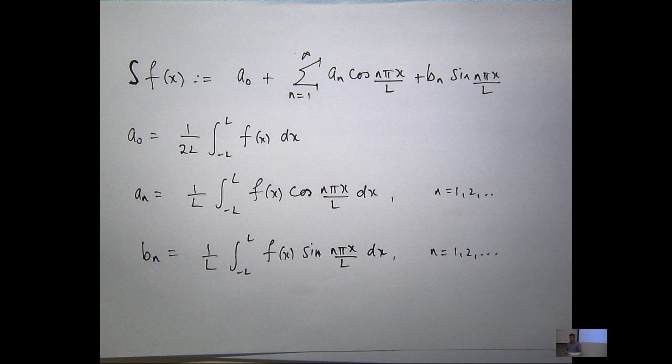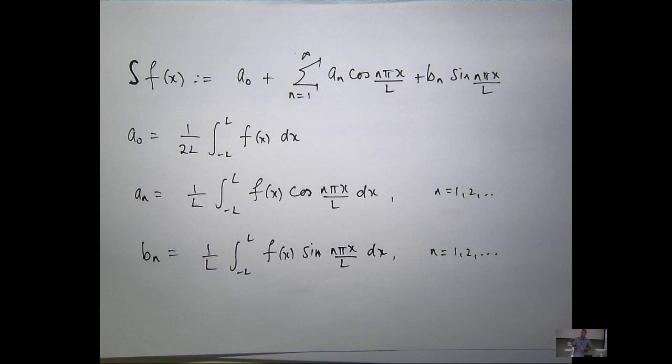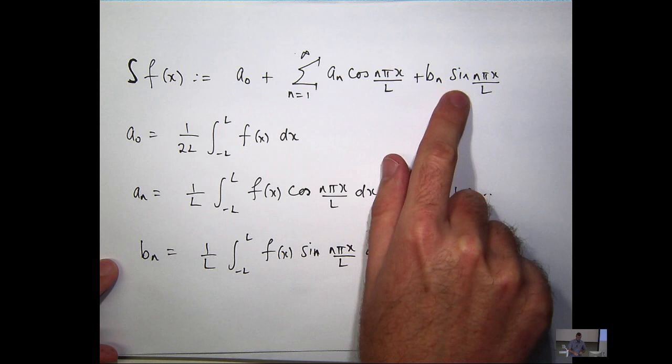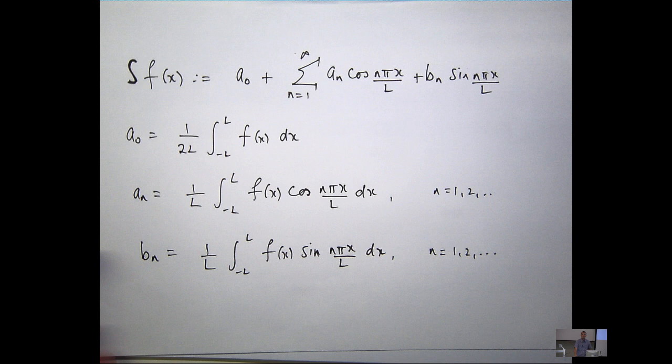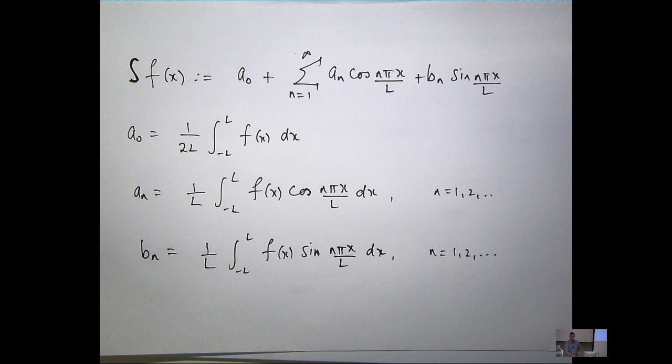So the first question: what is a Fourier series? Suppose we have a function f which is piecewise continuous and has a piecewise continuous derivative. Suppose also that the function is periodic with period 2L. A Fourier series is just a series involving cosines and sines. When you want to calculate a Fourier series, we calculate the coefficients — the a-nought, the a_n's and the b_n's — using integration.